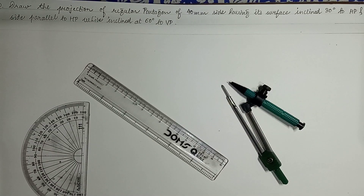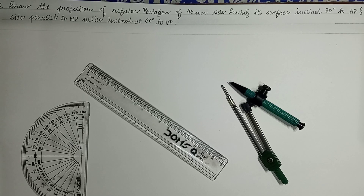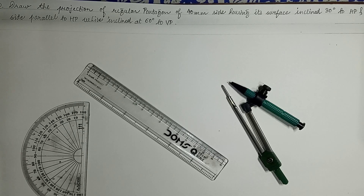Let us see the basic definition of auxiliary plane. Normally you have two views of an object — the front view and the top view — projected on both principal planes. Sometimes these are not sufficient to convey all the information about the object, so an additional view called the auxiliary view is projected on another plane known as the auxiliary plane. The auxiliary plane is used to get the true length of a line, the point view of a line, the HV of a line, and the true shape of the plane.